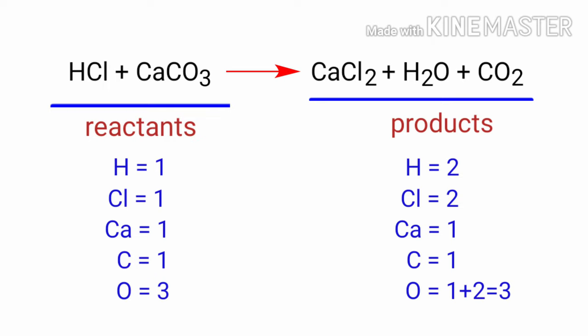The number of atoms are not balanced on both sides. To balance the chemical equation we need to make use of coefficients. A coefficient is a number that we place in front of a chemical formula.